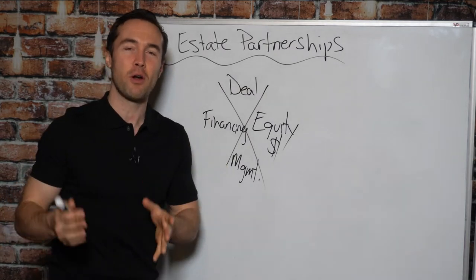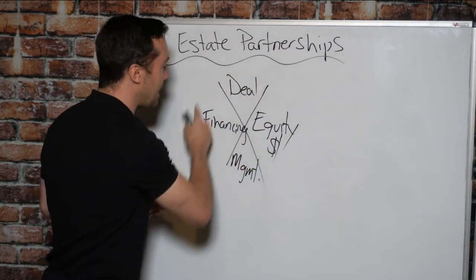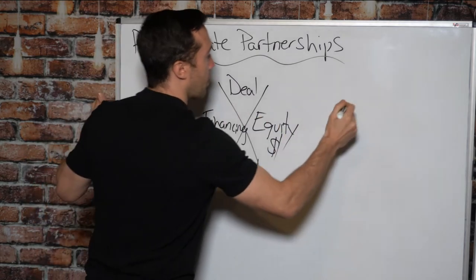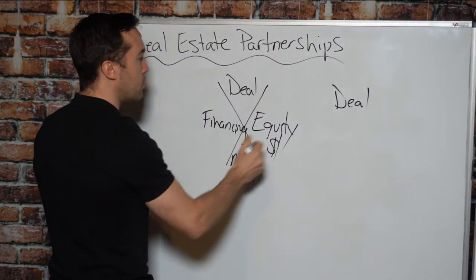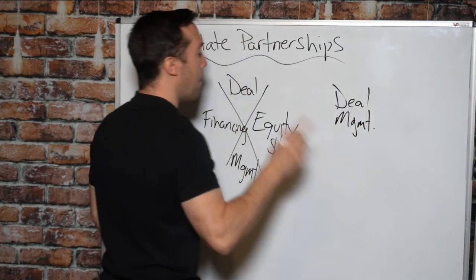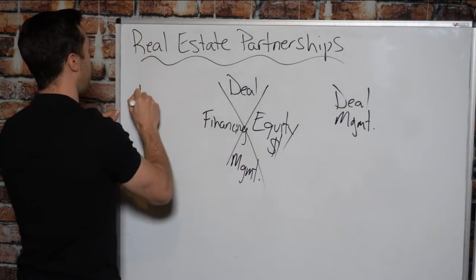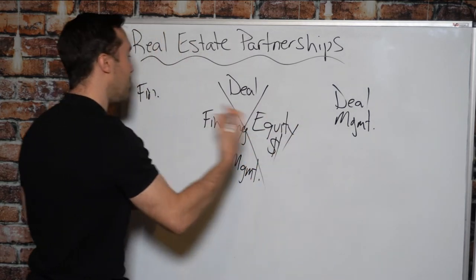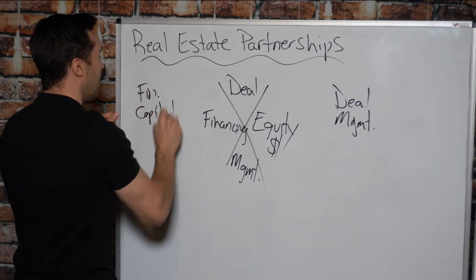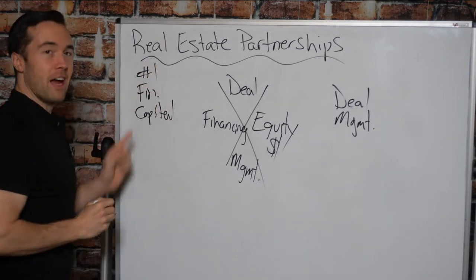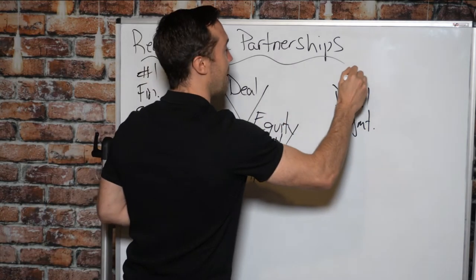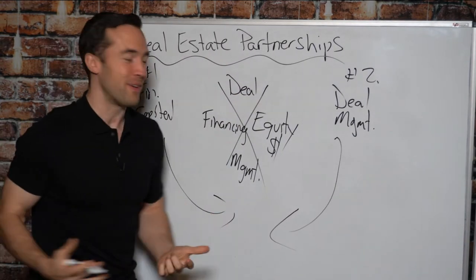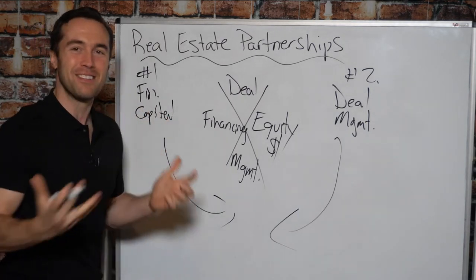So how does this equate to partnerships? Because every single deal needs each of these four components, what if you don't have those yourself? For instance, let's say you have the deal and you can manage it — you have the market experience and knowledge — but you can't get the financing, and maybe you don't have all the equity needed. It's almost like trying to bake a cake with only half the ingredients. It's not going to work out.